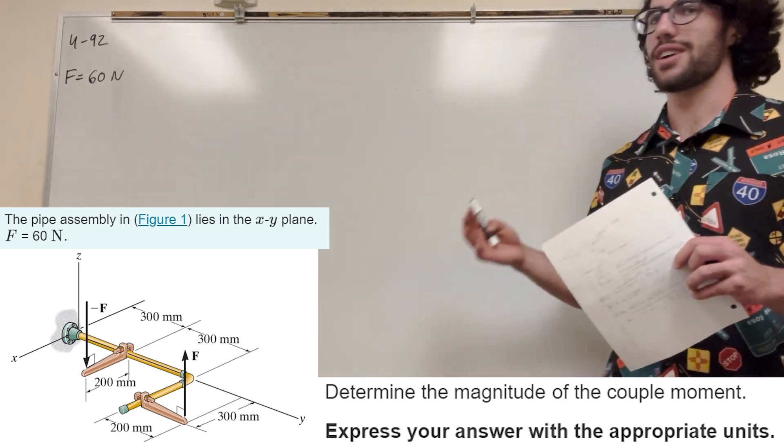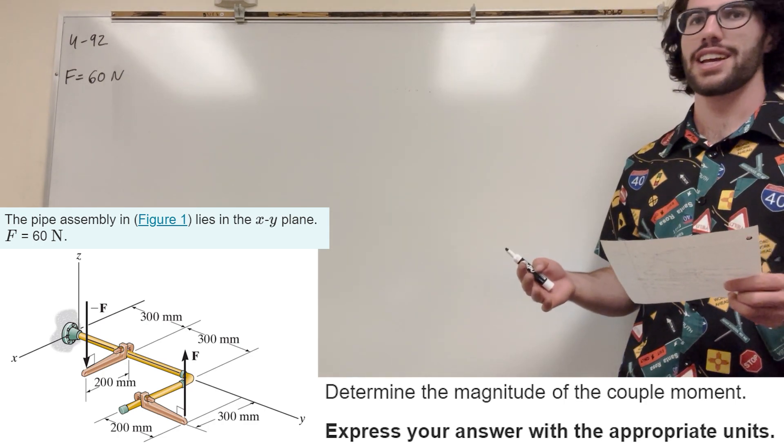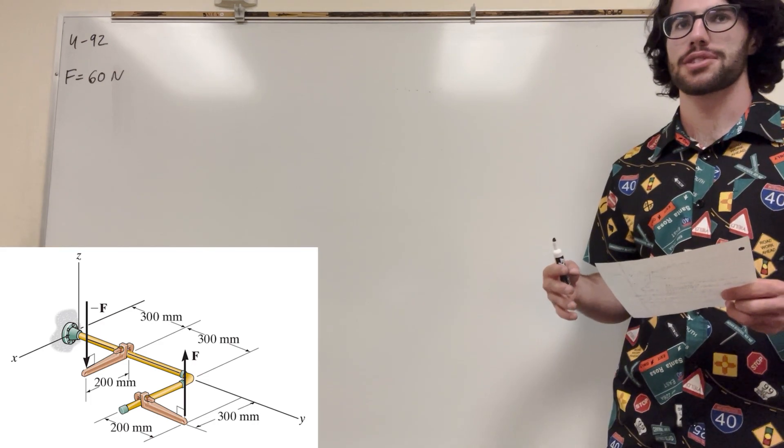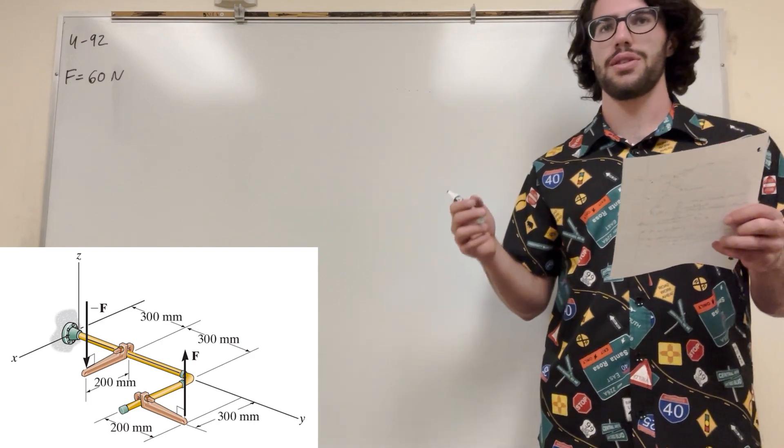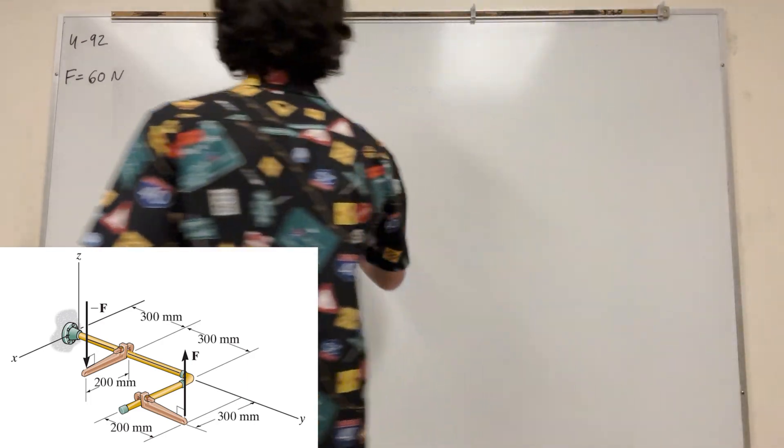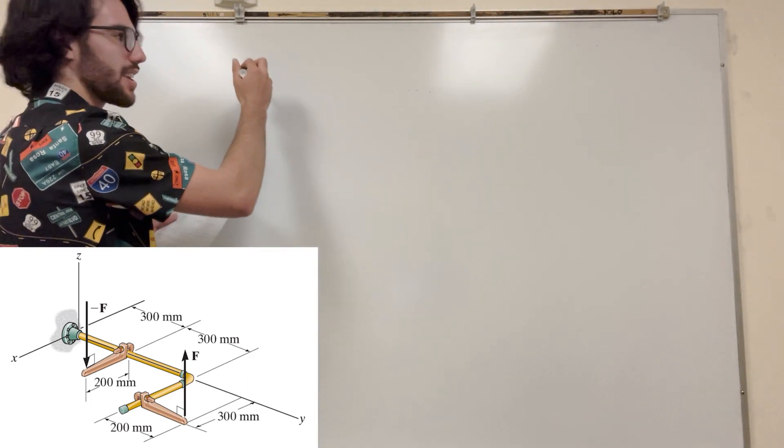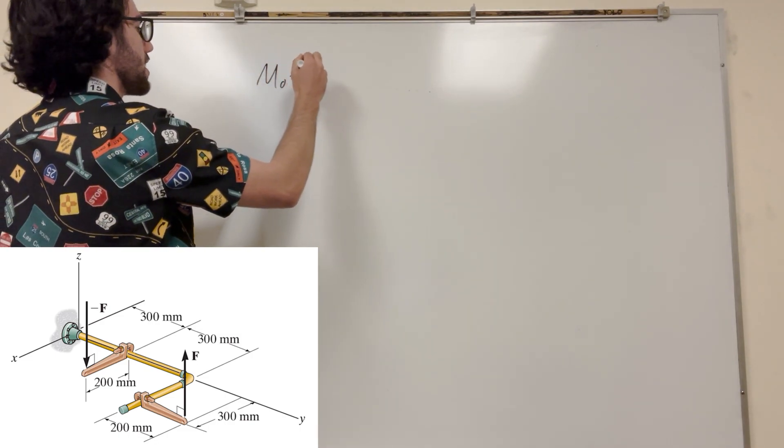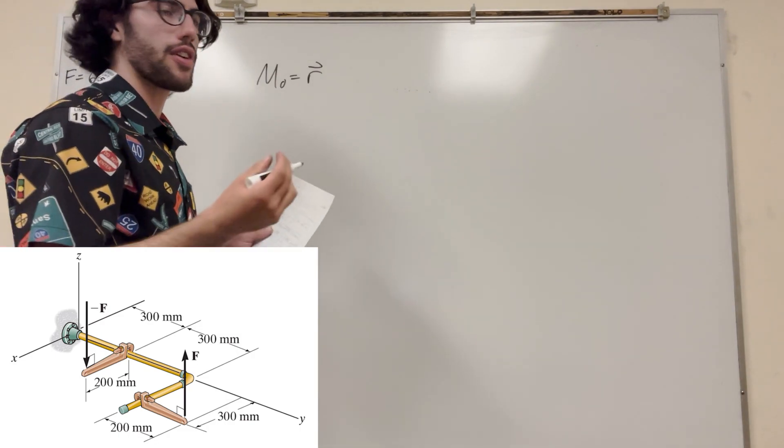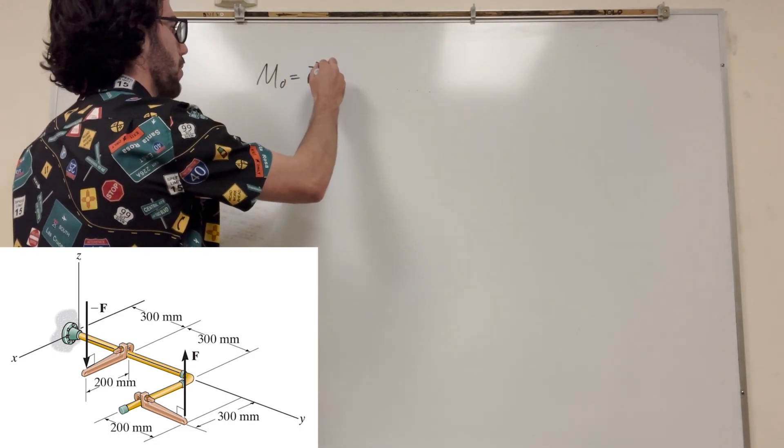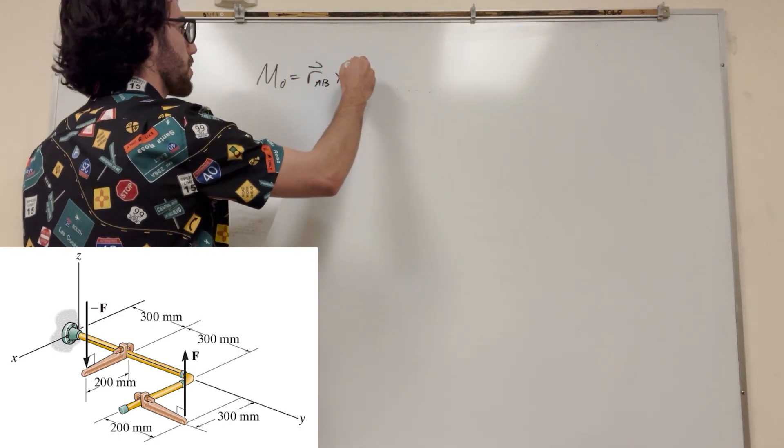So when we have a couple moments, there's a different way that we can solve these moment problems. So using this moment problem, when you have a couple, the moment around O is equal to the position vector from A to B, or from like one couple to another, crossed with that force vector.